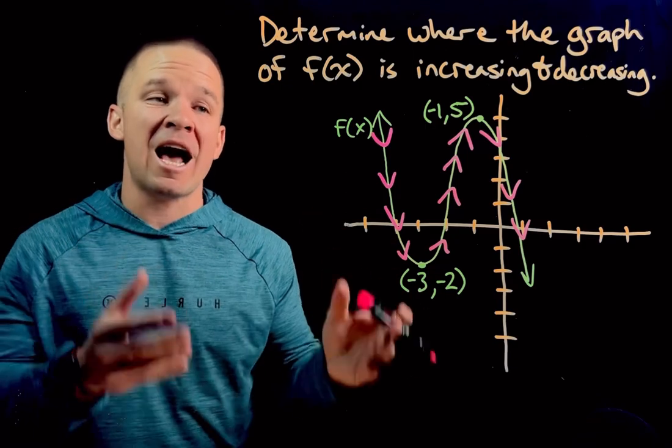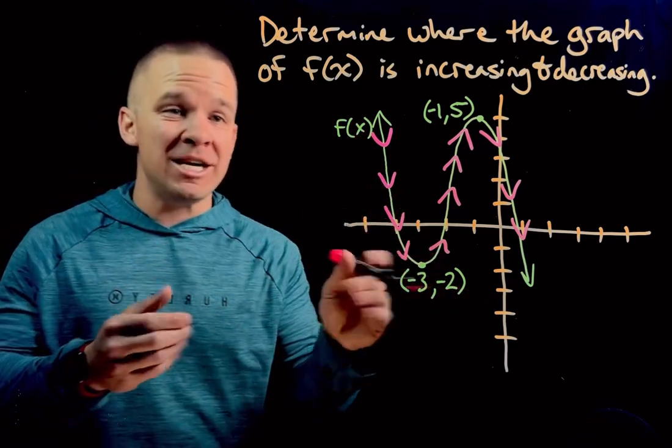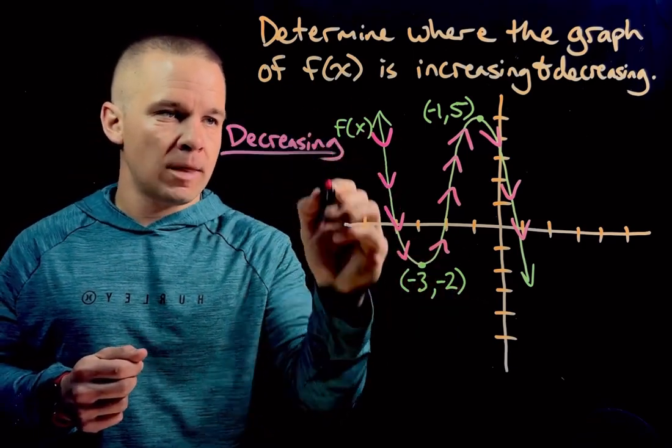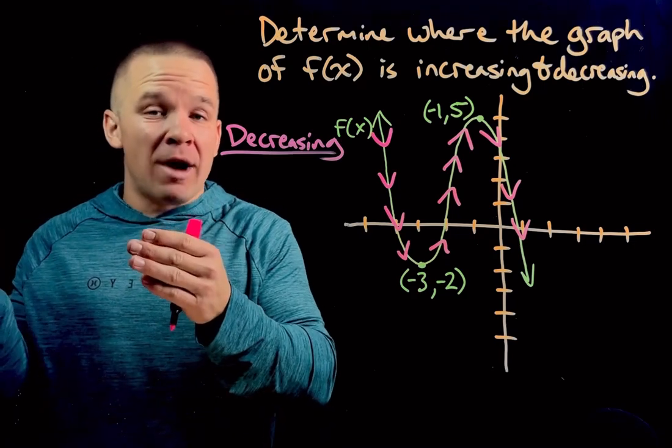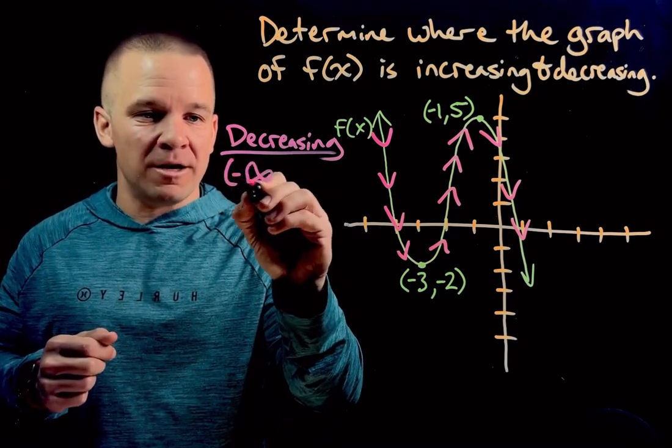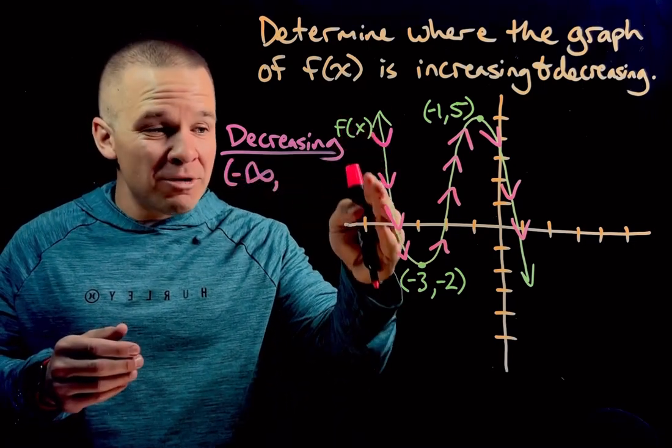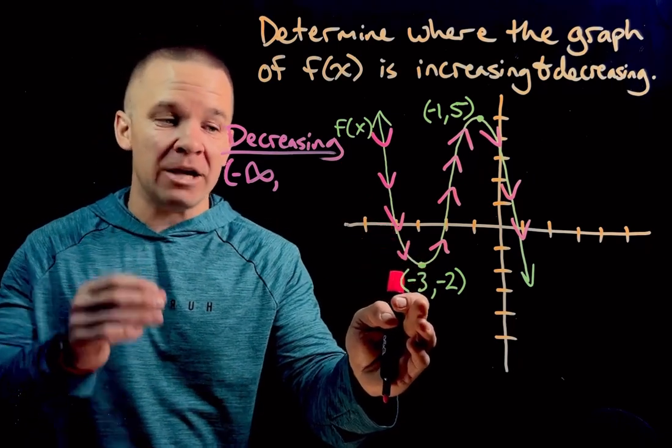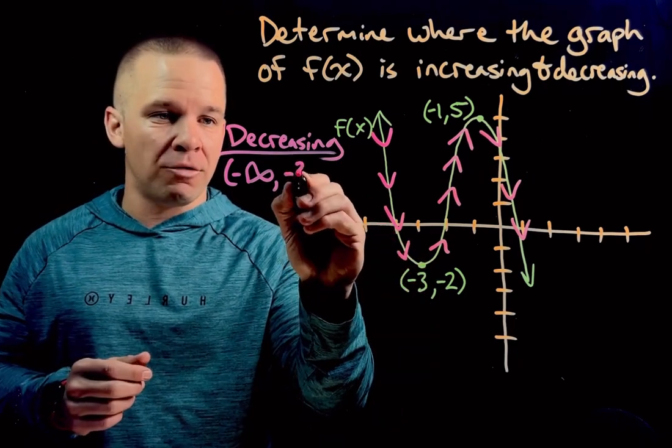So I'm going to say where this is happening. Let's start with our decreasing right here. So the far left side of my graph would be negative infinity. Then I'm decreasing until my x value is negative 3. So I'm going to put negative 3 here.